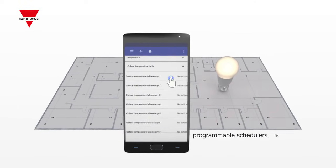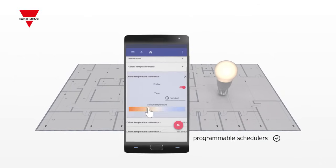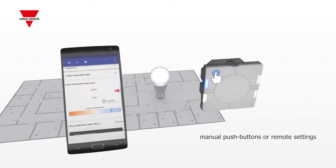Schedulers can be programmed to move from warm to cool light, or the user can set scenarios manually by using push buttons or by means of their smart device.